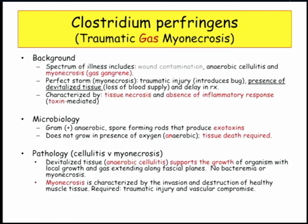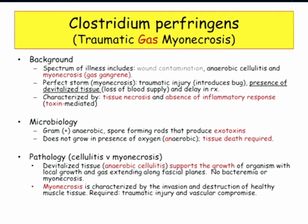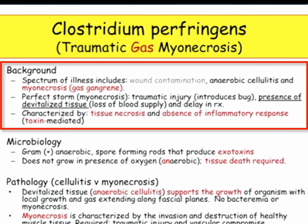We're going to start with C. perfringens, and we're talking about gas myonecrosis. There is a spectrum: wound contamination — forget about it, they're not going to ask you that. Anaerobic cellulitis you need to know, because that's the infection that predisposes to myonecrosis, gas gangrene. You get this perfect storm of myonecrosis: you need a traumatic injury that introduces the bug.